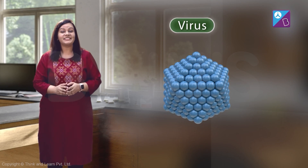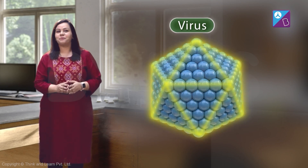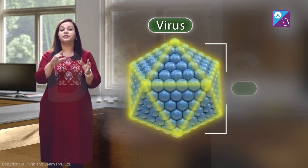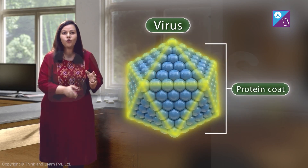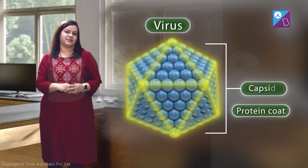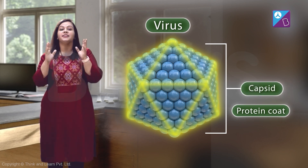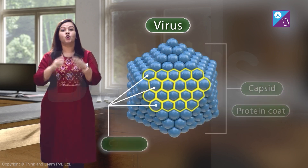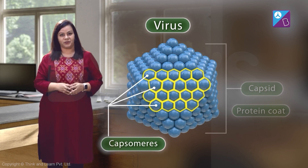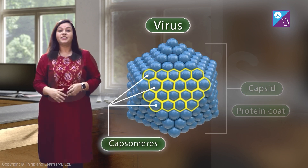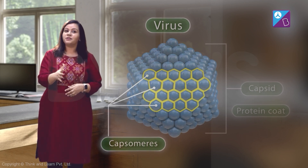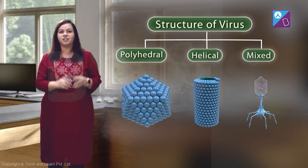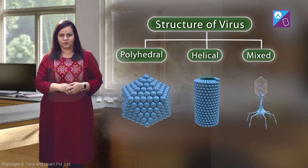A typical virus has a covering made of proteins, which is called the protein coat or capsid. This capsid is made up of small subunits called capsomeres. These capsomeres can be arranged in various three-dimensional geometric forms.